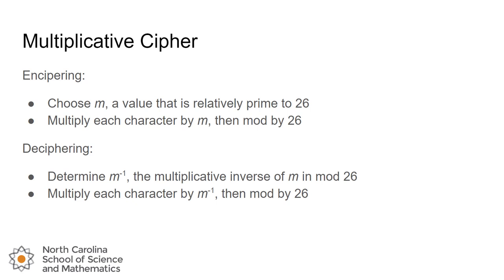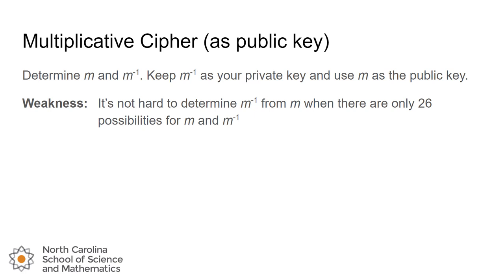We can build on that: we could use m-inverse as our private key and give away m as the public key. But the main weakness is that it's not hard to determine m-inverse when you know m — there are only 26 possibilities, so you could brute force that in fractions of a second. Very insecure. But what if we increase the number of possibilities? That's what we're going to look at with KID RSA.